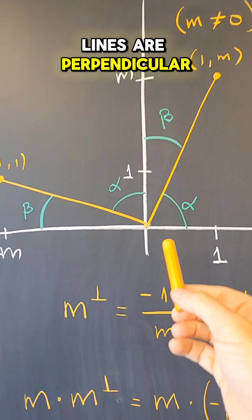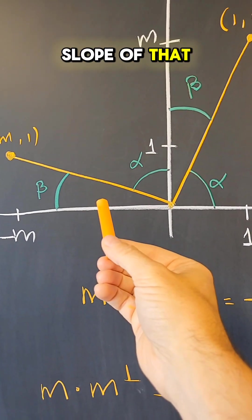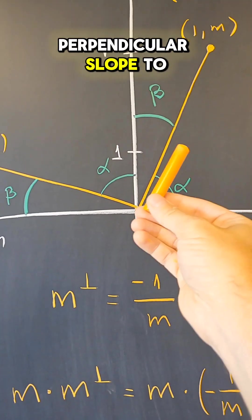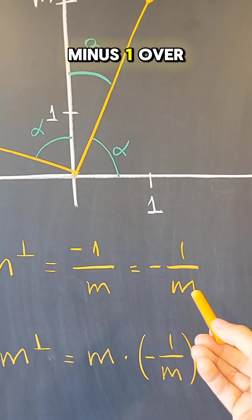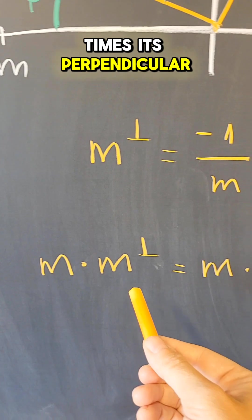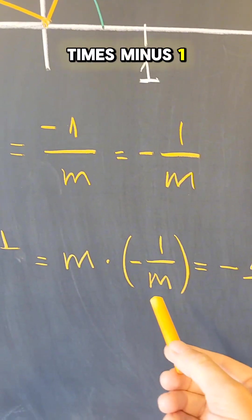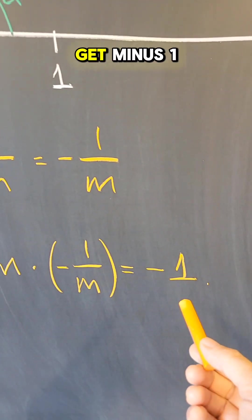So these two lines are perpendicular and therefore the slope of that line, which is the perpendicular slope to this one, is minus one over m. And so m times its perpendicular slope is m times minus one over m. The m's cancel out and I get minus one.